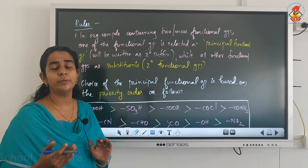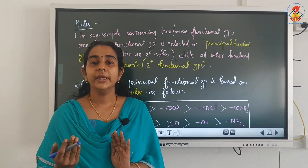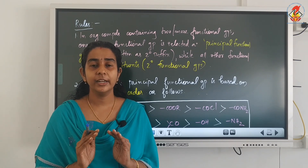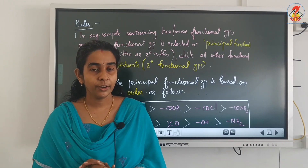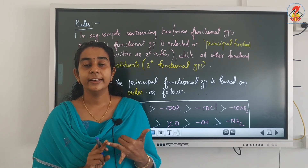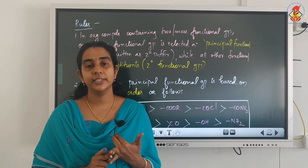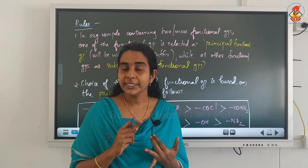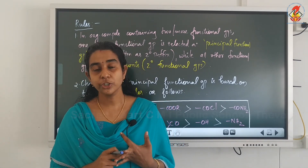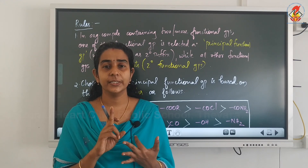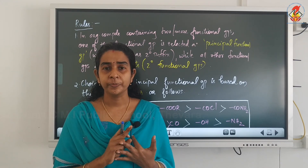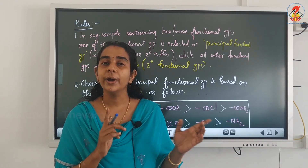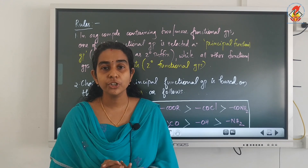Polyfunctional means containing more than one functional group. The basic structure of the name of an organic compound is: there will be one word root, then primary suffixes — ane, ene, or yne — and then only one secondary suffix representing the functional group. So if a compound contains more than one functional group, only one will go as secondary suffix.